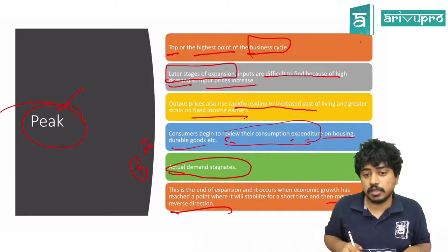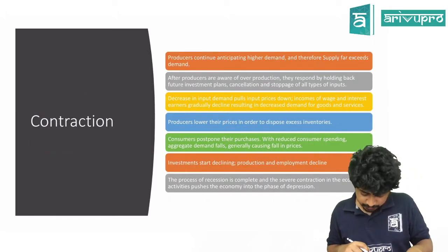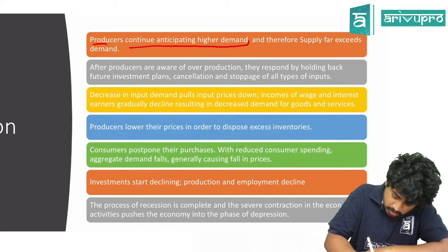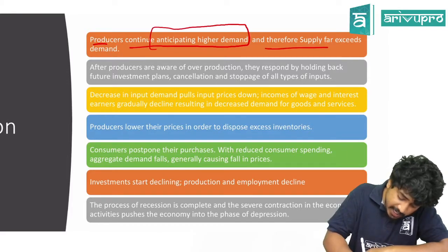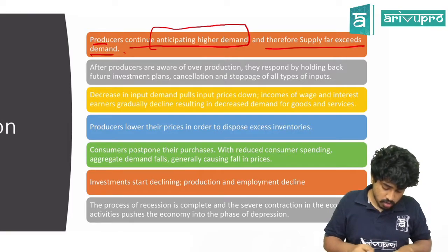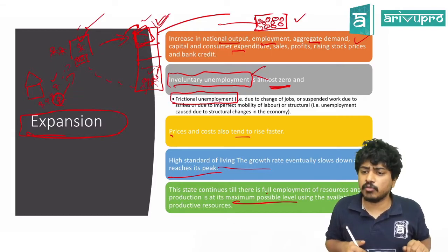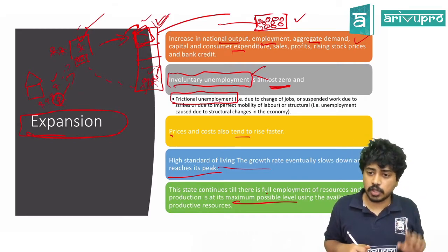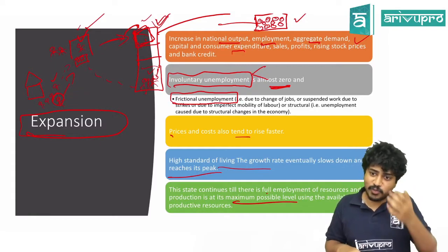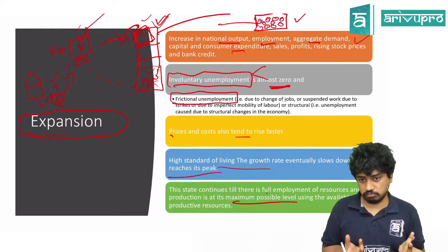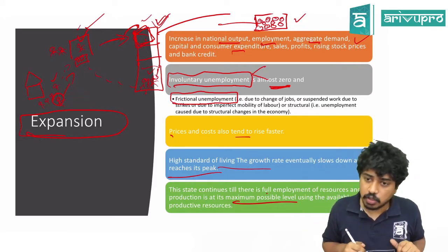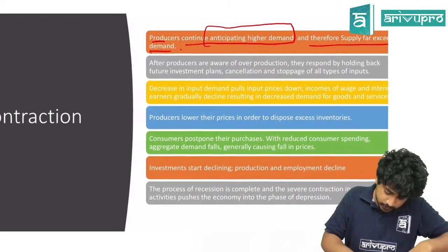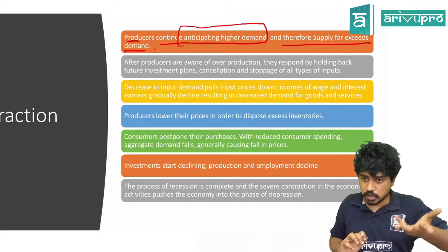Producers continue anticipating higher demand, thereby supply far exceeds demand. Yesterday 500 people came for tea normally; the price increased, but I might not know you won't come. So I'll order inputs for 500 teas again. Now supply is exceeding demand.